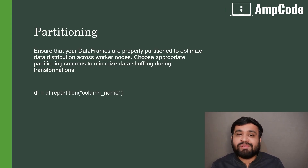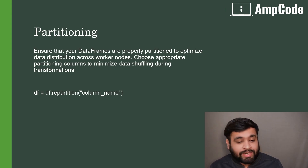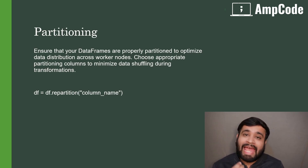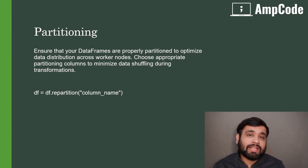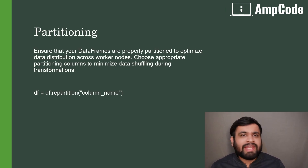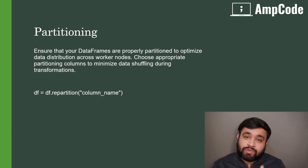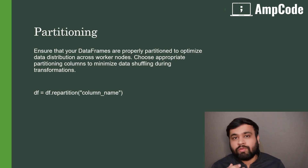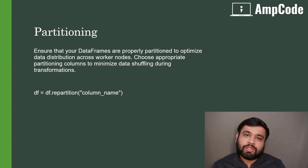To repartition, you just use df.repartition() with the column name as the argument. For example, if you have geographical information in your DataFrame, you can use regions as the partitioning column — if your data is equally distributed across regions. This is just an example; it will vary from use case to use case and dataset to dataset. Partitioning is very important for optimizing your Spark application.